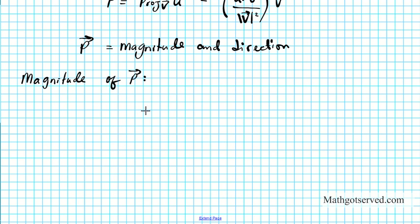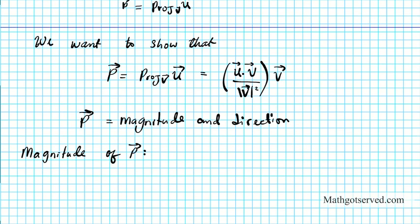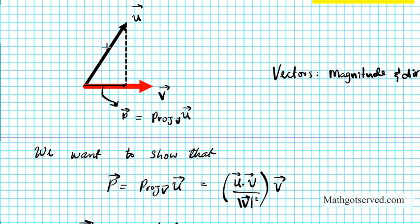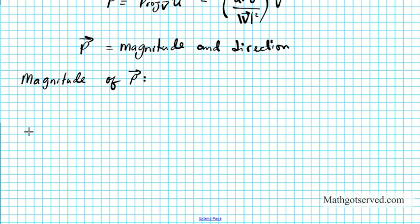To find the magnitude of vector p, we're just going to use the scalar component of u in this direction. In order to do that, we use basic right angle trigonometry.